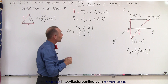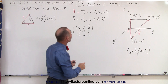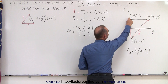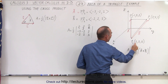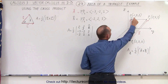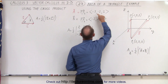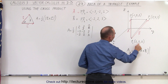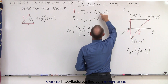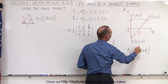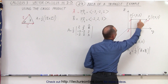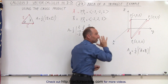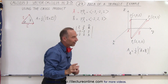How do we find these components? If we go in the x-direction from point one to point two, we go from positive two to negative one — that's a negative three change. From positive two to zero, that's a negative two change. From zero to positive two, that's a positive two change. That's how we found the vectors.